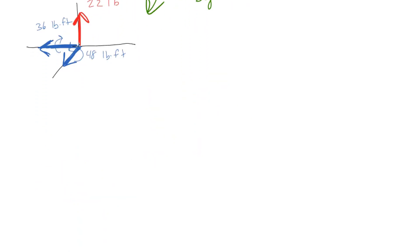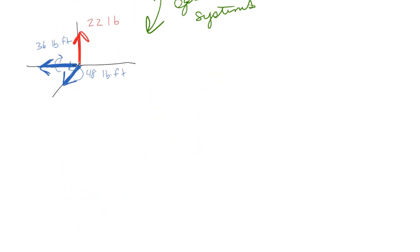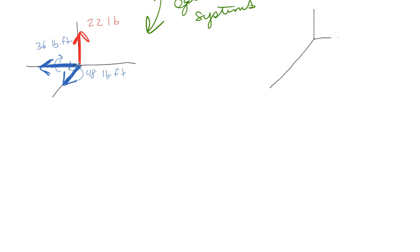The next step is we can combine those two moments and create a single moment pointed in some kind of a diagonal direction. I'll draw my x and y axes. We can do the square root of the sum of the squares: 36 squared plus 48 squared is going to give me 60 foot-pounds.